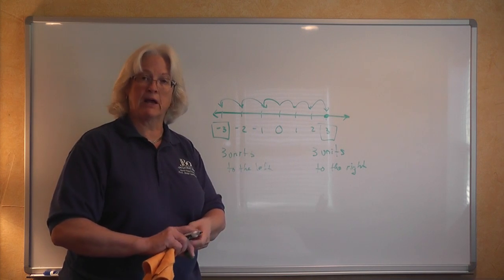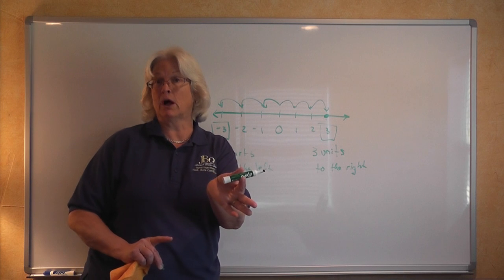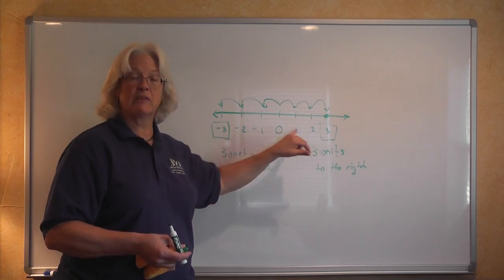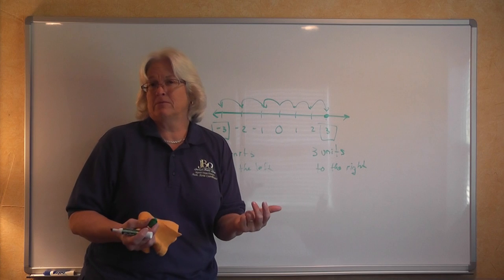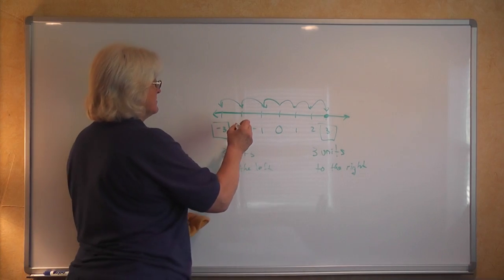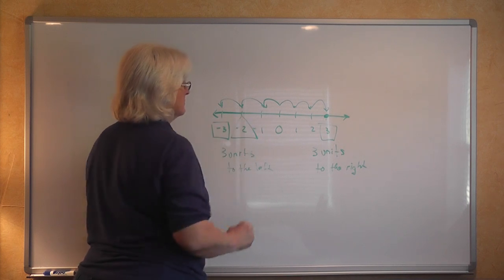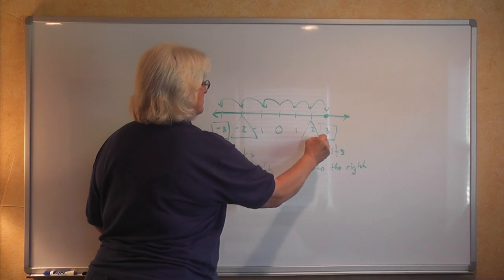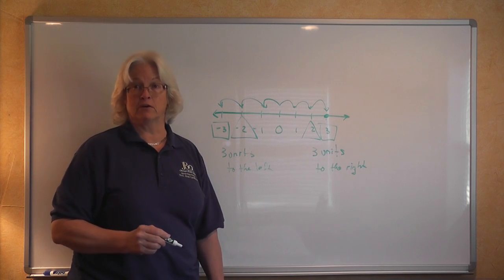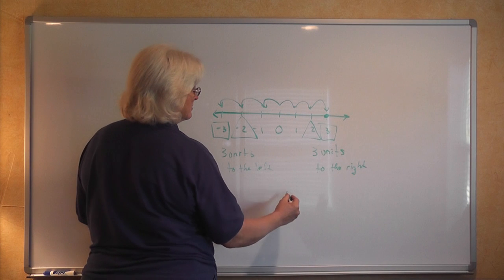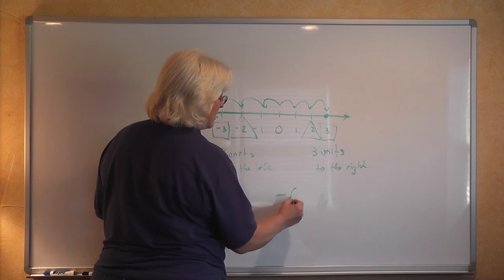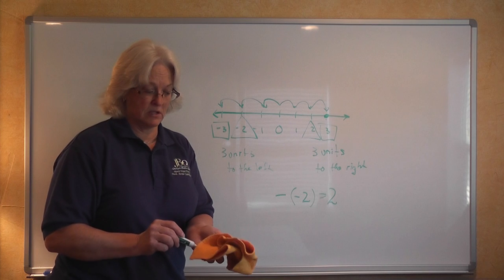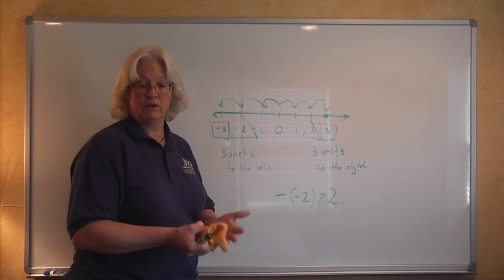Zero is like the balancing point on a seesaw. As long as you are the same number of units from zero, that's the opposite of that number. So the opposite of three is negative three. But what if we wanted to know what the opposite of negative four was? The opposite of negative two is equal to a positive two. So these are the numbers we're talking about when we define integers.